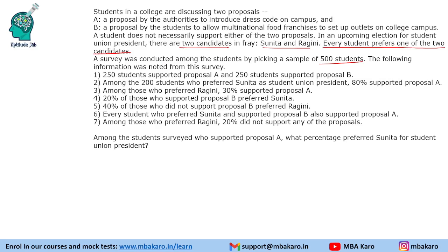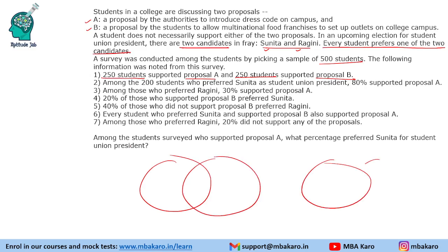We will use a Venn diagram because some people will vote for Sunita, some for Ragini, some will support Proposal A, and some will support Proposal B. 250 students supported Proposal A and 250 students supported Proposal B. The challenge here is how to draw the Venn diagram — should we draw two Venn diagrams for Proposal A and B and find how many support Sunita and Ragini, or draw Sunita (S) and Ragini (R) and find how many support A and B?